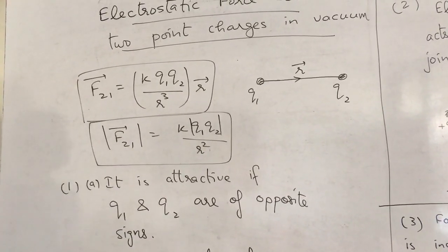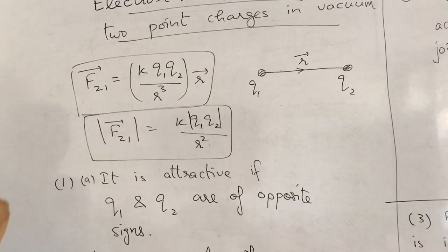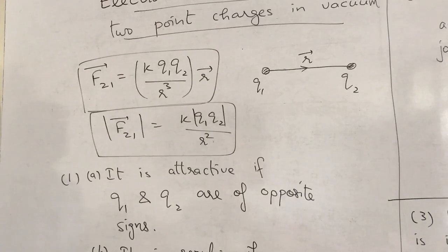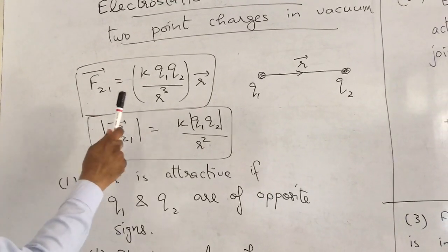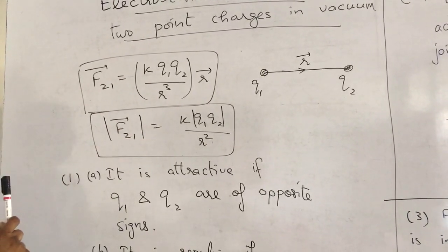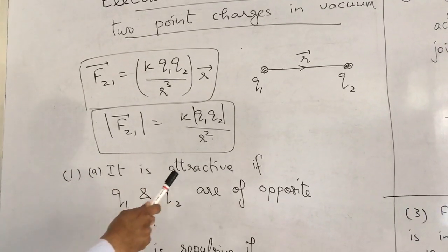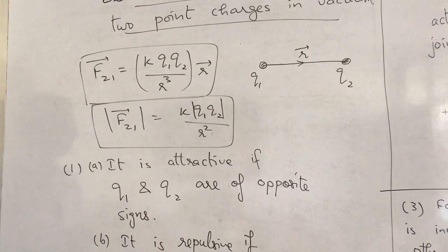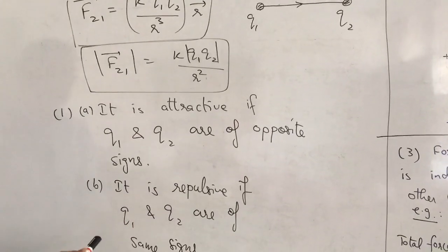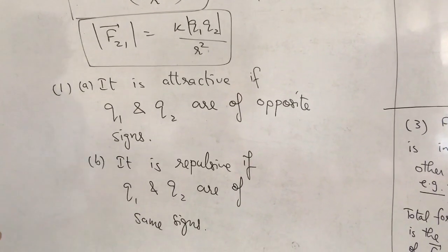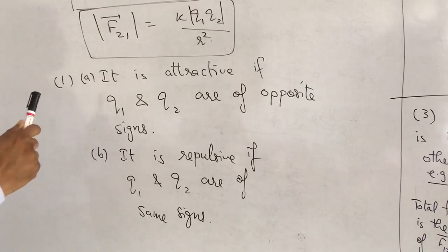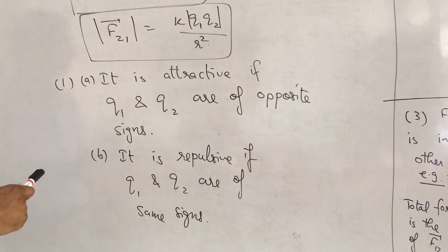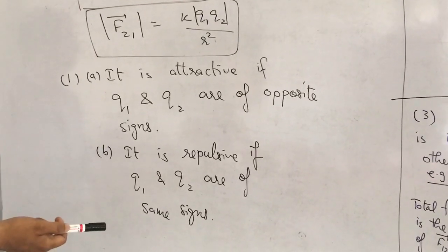We'll discuss properties of this force and solve one problem using the principle of superposition. First point: this force is a vector quantity. It is an attractive force if Q1 and Q2 are of opposite signs. It is a repulsive force if Q1 and Q2 are of the same sign. Charges can be positive or negative, so force can be attractive as well as repulsive.